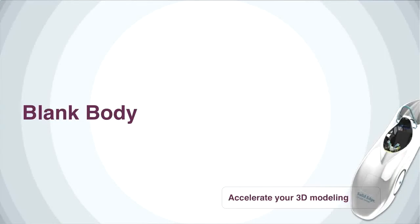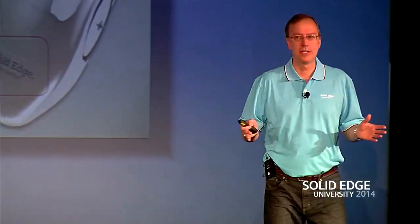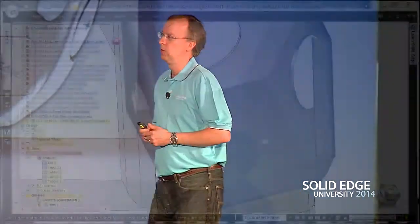Next up is one of my top features. In ST6, we brought a new way to do sheet metal with stamped parts using emboss features. The obvious question is: how do I flatten that? Normally you'd buy a package costing $5,000 to $15,000 more to flatten those complex shapes. Not in ST7. Built directly into Solid Edge Classic and Premium, you'll be able to do this without extra cost.